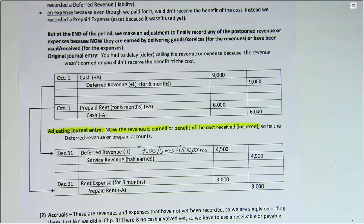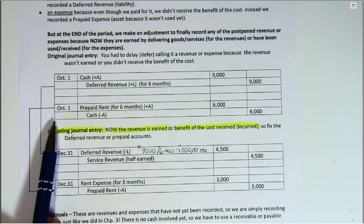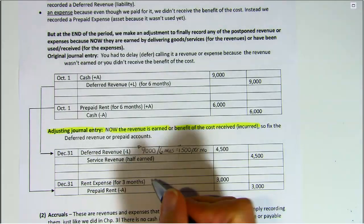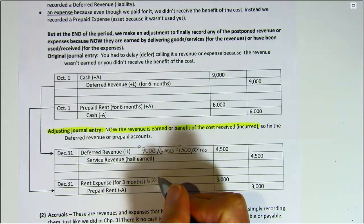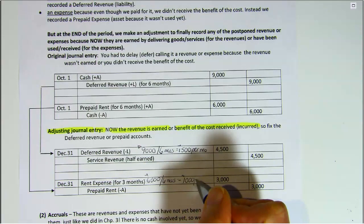Now let's take a look at the expense side. Back on October 1st, we prepaid six months' worth of rent, and that represented a future benefit — an asset. But now it's December 31st, so we've used up three months' worth of rent. To find out how much we used up, we take the full $6,000 and divide it by six months, and that is $1,000 per month.